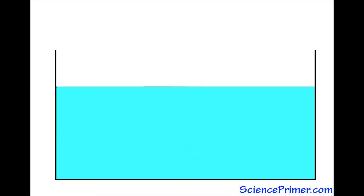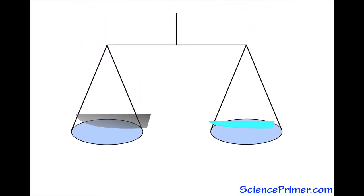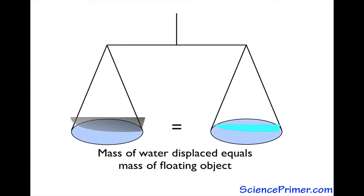When placed in water, even a floating object, such as a boat, displaces some of that water. The object's mass determines how much water is displaced. Specifically, an object sinks into the water until it displaces a volume of water equal to its own mass.